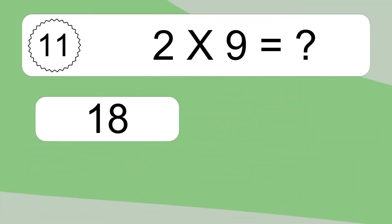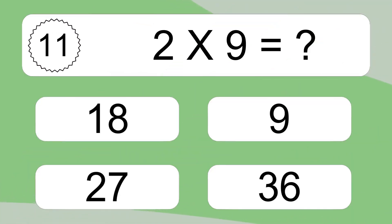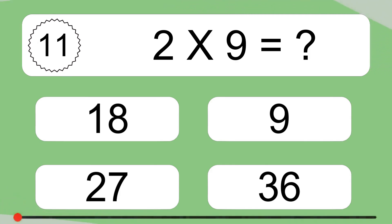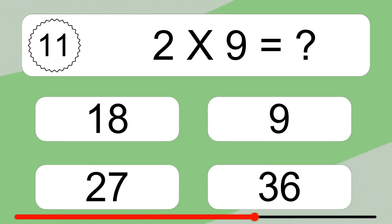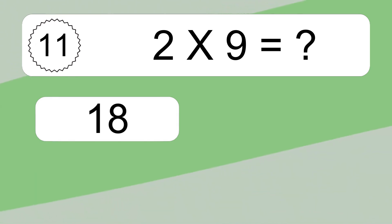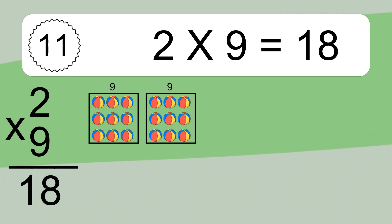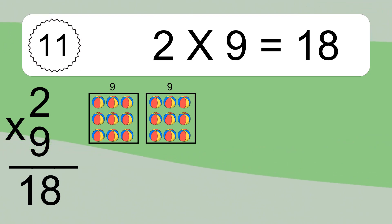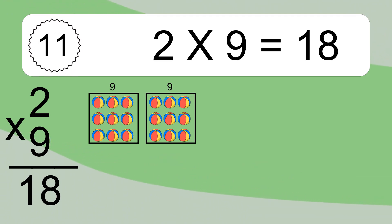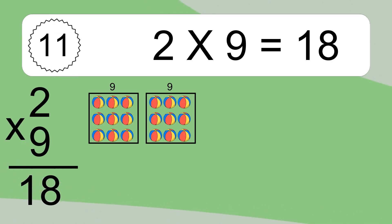2 times 9 equals what? 2 times 9 equals 18. We have 2 boxes, and each box has 9 colorful balls inside. If you count all the balls in all the boxes together, you will have 2 times 9 balls. This equals 18 balls.